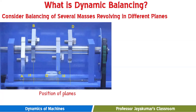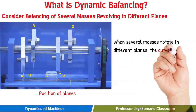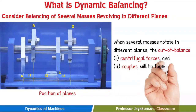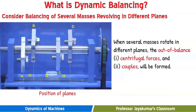When several masses rotate in different planes, in addition to the out-of-balance centrifugal forces, a couple is also produced. The system of rotating masses is in dynamic balance when there does not exist any resultant centrifugal force as well as resultant couple.